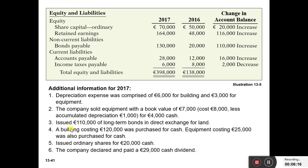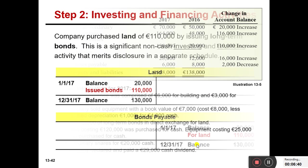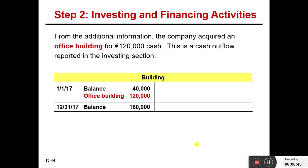From point number 4 in the additional information, we can see: 'Building costing 120,000 euros was purchased for cash' and 'Equipment costing 25,000 euros was purchased for cash.' This information is sufficient to take these to the cash flow statement in simple questions, but it is better to prepare a ledger account for long-term assets so you have a complete picture of the entire situation.